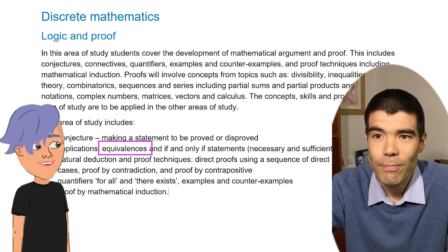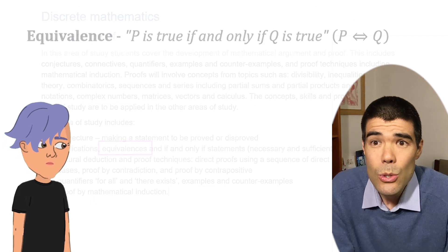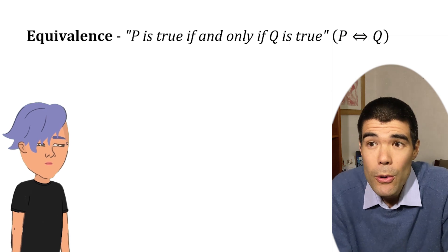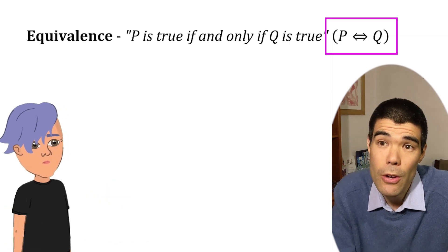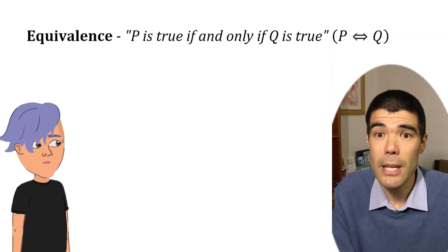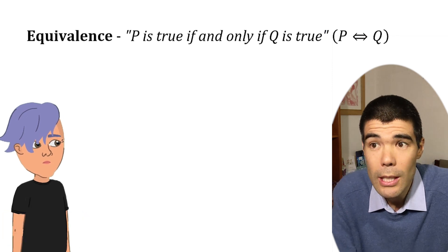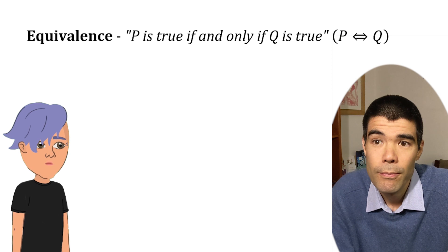Okay, what about equivalences? Alright, so two statements are equivalent if they both imply each other. And we use this symbol to show that. Another way of saying that is P is true if and only if Q is true. Can you give me an example?